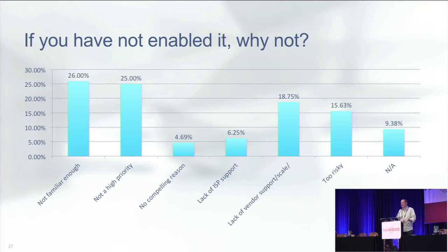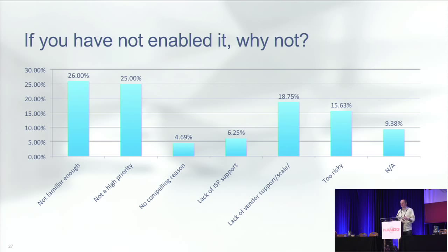The next survey question was: if you have not enabled it, why not? The two most common answers were 'not familiar enough with it' — which comes back to why I'm here — and 'it's not a high priority.' People have just been busy working on other things and haven't gotten around to it. Beyond that, the next most common thing I hear — not just in the survey but in talking to people — is a lack of vendor support or lack of vendor scale. That is getting better, though there are still some features not supported and some scaling work that needs to be done by the vendor community.